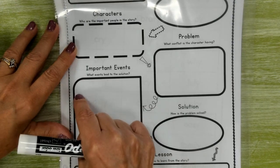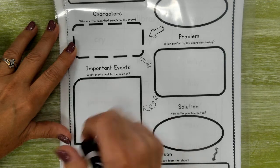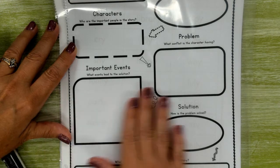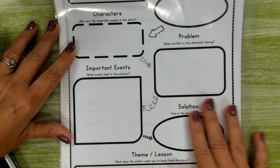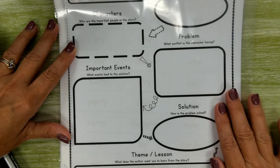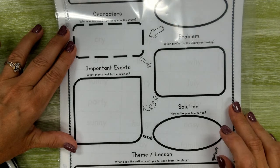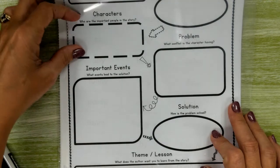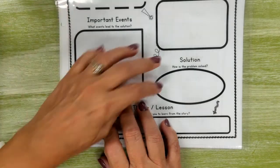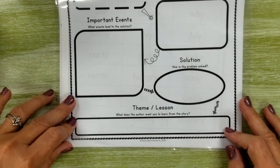List the important events. You can even put numbers two, three. I would write small in this one if you're doing it by hand because there's several events that lead up to it. Then what was the solution? How was this problem solved?